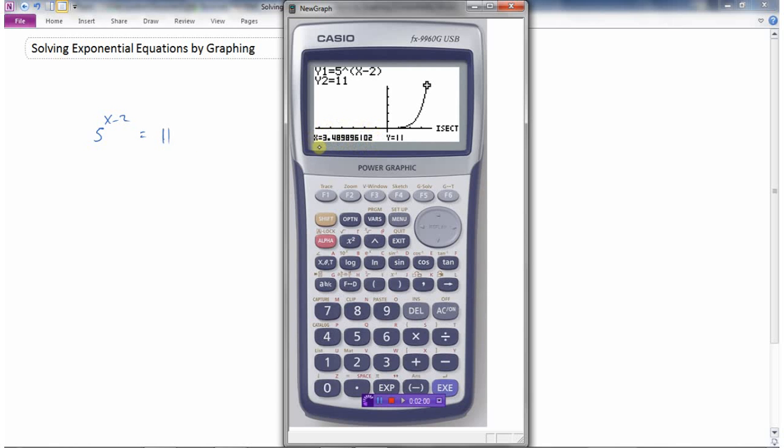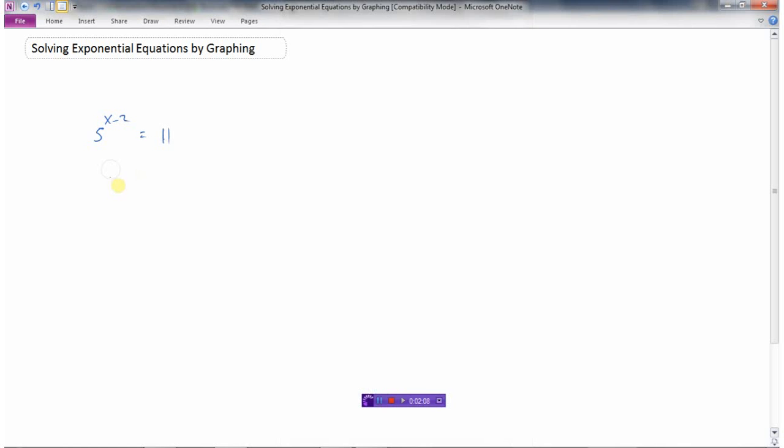And this is an approximation because it's an irrational number. So let's say we have to round it to two decimal places, then I could say x equals 3.49. So that would be one way of doing it: make y1 equal to 5 to the power of x minus 2, and make y2 equals 11, and then find the intersection point.